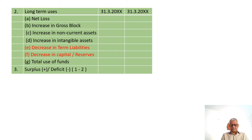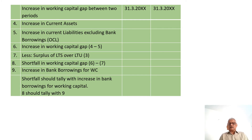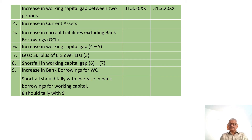Now for the third part: we find the increase in working capital between two periods. By the MPBF method, working capital gap equals total current assets minus other current liabilities — that is, current liabilities excluding bank borrowing. Between two balance sheets, we look at the increase or decrease in current assets and the increase or decrease in other current liabilities excluding bank borrowing. The difference gives you the increase or decrease in working capital gap.